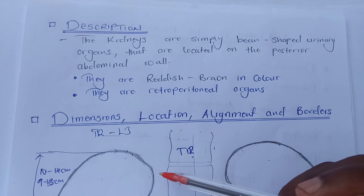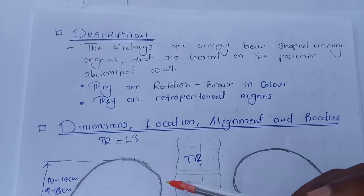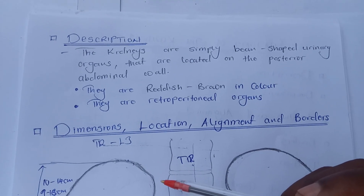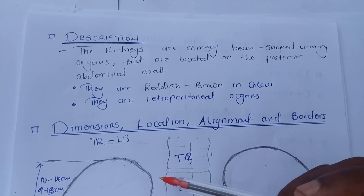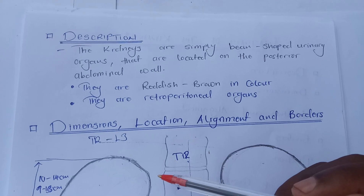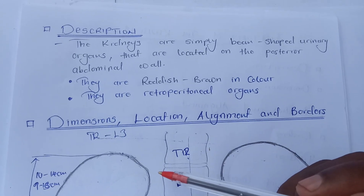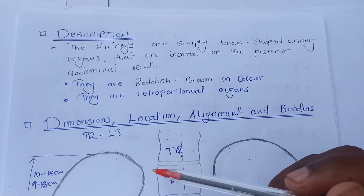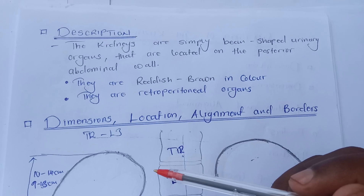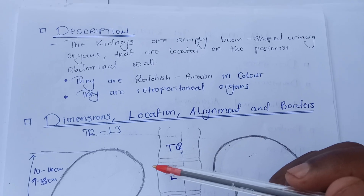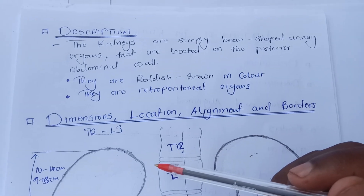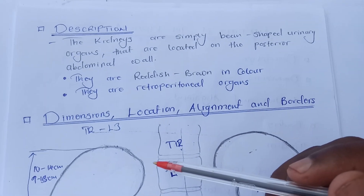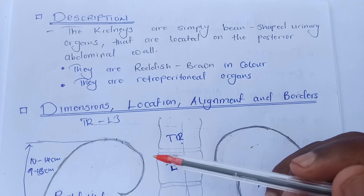So how do we describe the kidneys? The kidneys are simply bean-shaped urinary organs located on the posterior abdominal wall. They are reddish-brown in color and they are retroperitoneal organs, meaning they are located behind the peritoneum, and they are fixed organs.